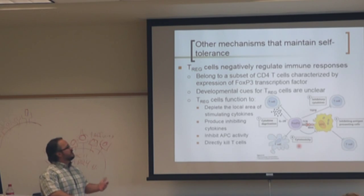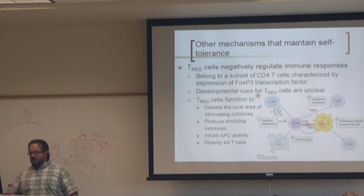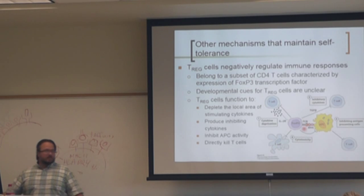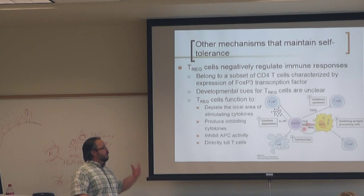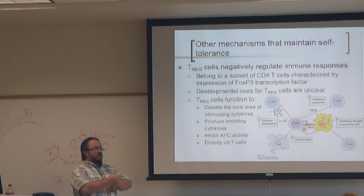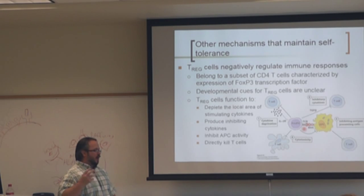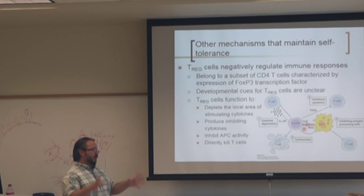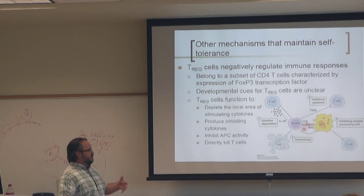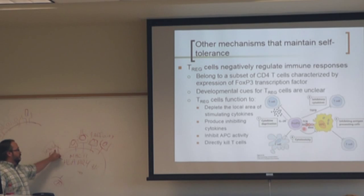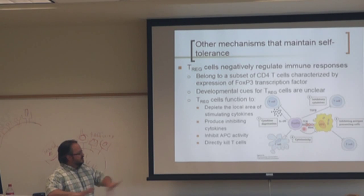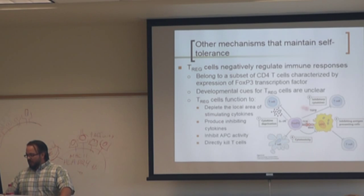Regulatory T cells are CD4s that recognize self-antigens. They go out to the periphery, see self-antigen, and suppress the response. Tumor cells will induce regulatory cells by expressing cytokines that drive regulatory rather than T helper cell differentiation, creating a suppressive environment. In autoimmune disease research, a lot of work is focused on developing Tregs that recognize specific autoantigens — like the insulin B epitope — so they can go to that area where the B epitope is being presented and suppress the immune response there.